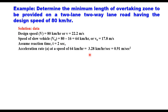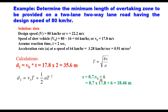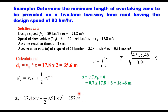At a speed of 64 km/h, the acceleration rate from the table is 3.29 km/h per second or 0.91 m/s². With this data: d1 = vb × t = 17.8 × 2 = 35.6 m. For d2, the overtaking time T is calculated as √(4s/a), where s = 0.7 × vb + 6 = 18.46 m, giving T = 9 seconds. Substituting into the d2 equation gives d2 = 197 m.